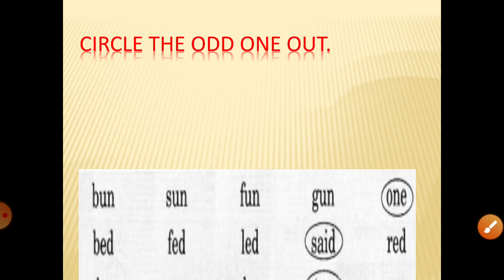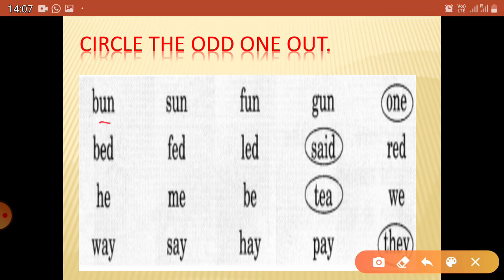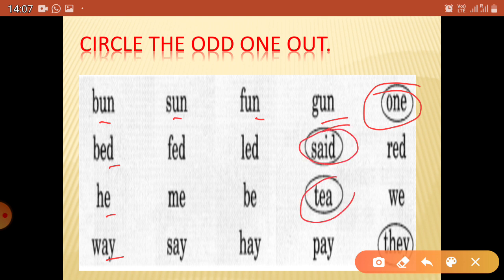Circle the odd one out. These are word families — the UN family, the ED family, the E family, and the AY family. You have to pick the word that doesn't belong to the family. For example, in the UN group — UN, UN, UN — but this one is not UN, so this is the odd one. Similarly, identify the odd one in each group.